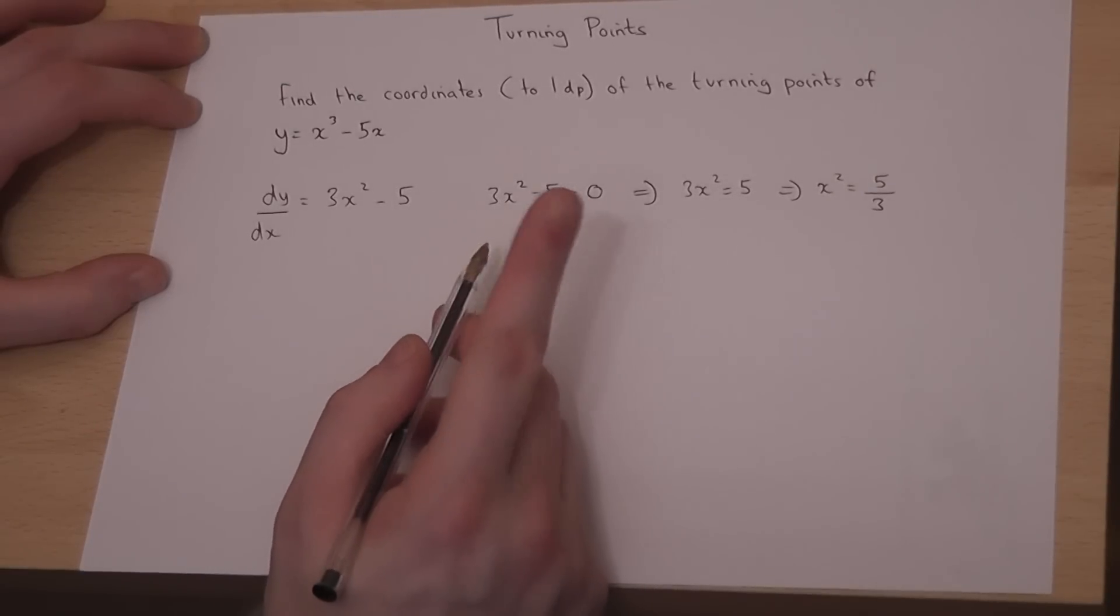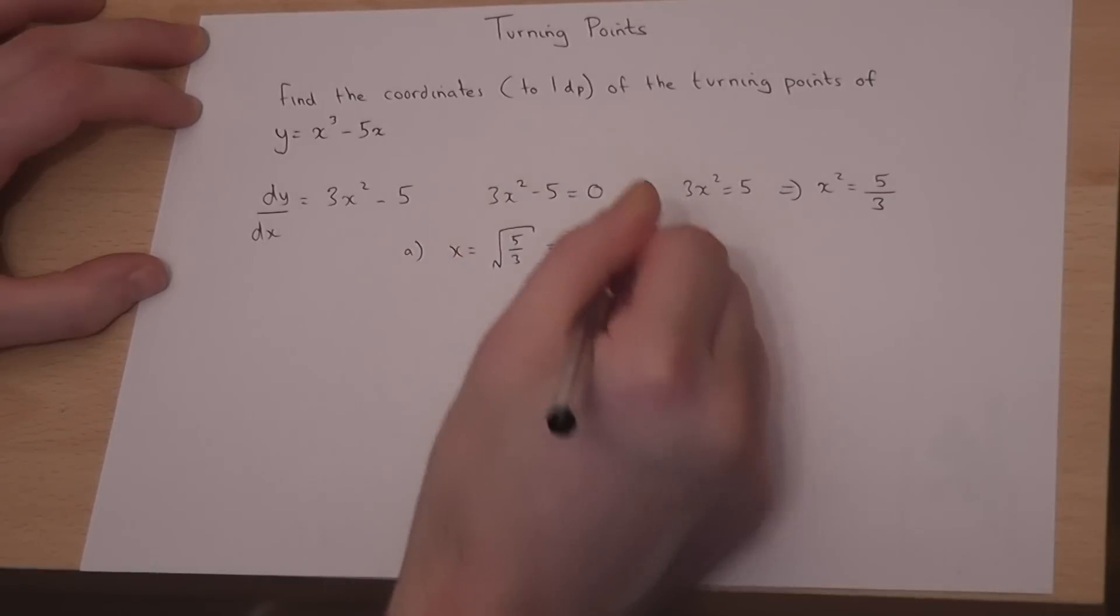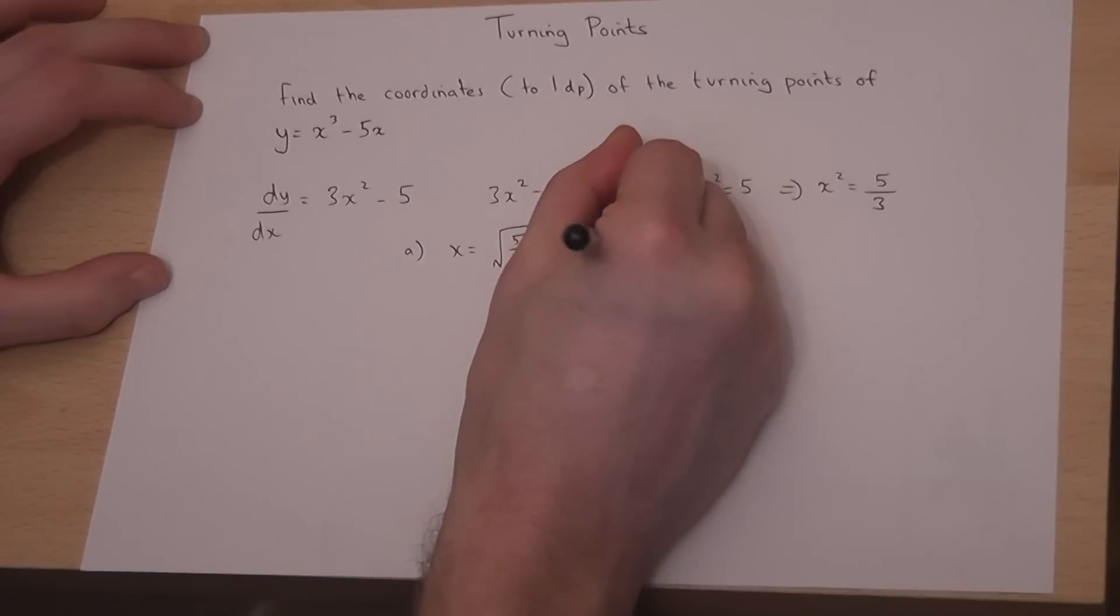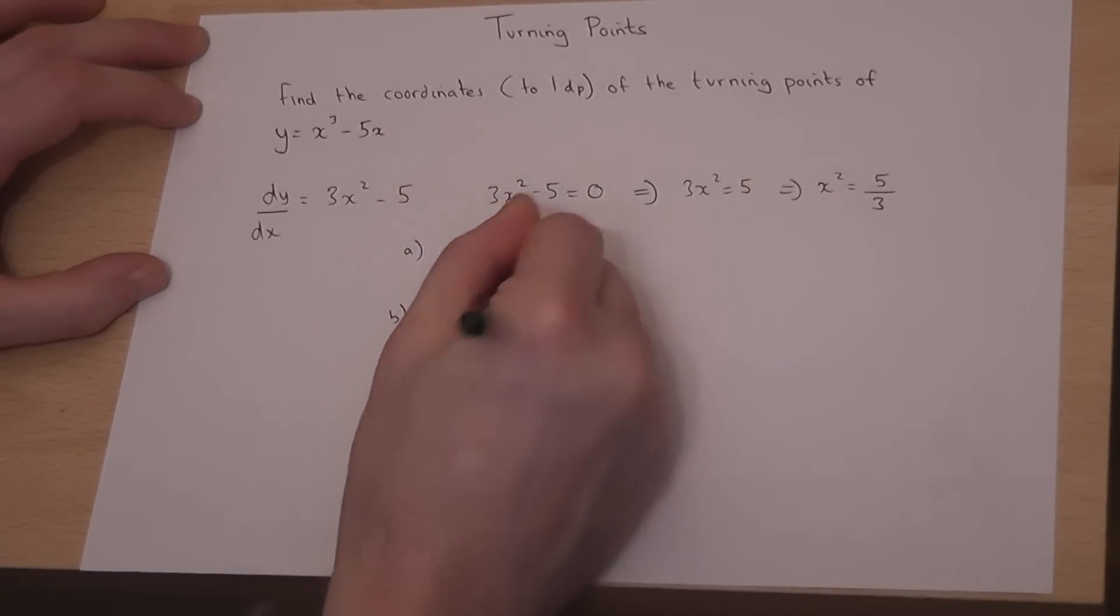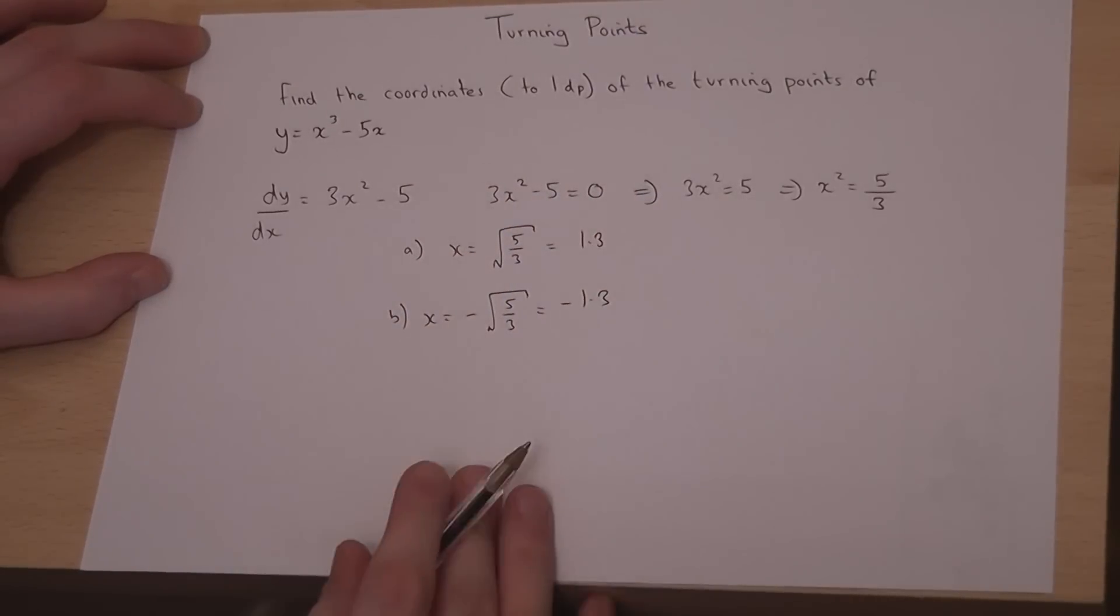But don't forget there are two possible values here. Either x is equal to the positive square root of 5 thirds, which turns out to be on the calculator 1.3, or x will equal the negative square root of 5 over 3, which works out to be minus 1.3, again to one decimal place.